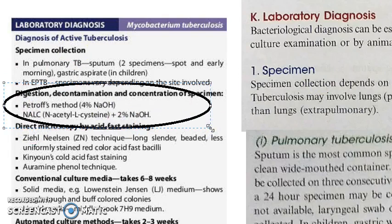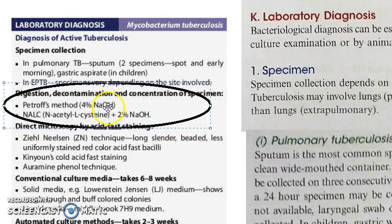There are two methods for this: Petroff's method and NALC — that is N-acetyl-L-cysteine plus 2% NaOH. In Petroff's method, it is 4% NaOH, whereas in NALC it is 2% NaOH.